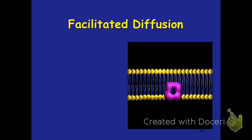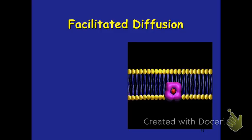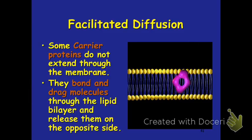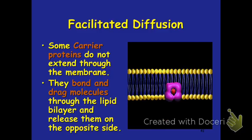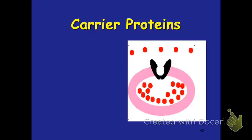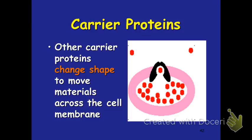Here is an example of a carrier protein — you can see the purple grabbing the little red molecule and moving it safely from one side of the membrane to the other. Sometimes the protein doesn't have to go all the way through the membrane; it can simply bind and drag and move things through to the other side. The carrier protein changes shape once the molecule binds, causing the protein to open the other way, moving things across the membrane.